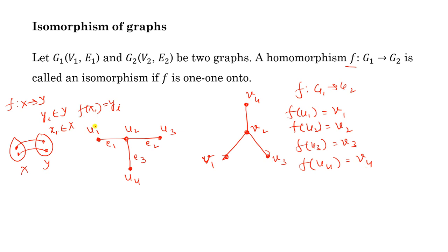The degree of u1 is 1, and the degree of v1 is 1, so u1 corresponds to v1. The degree of u2 is 3, and the degree of v2 is 3, so u2 maps to v2. Similarly, degrees of u3 and u4 are both 1, corresponding to v3 and v4 respectively.